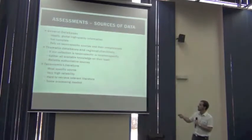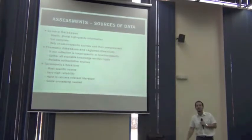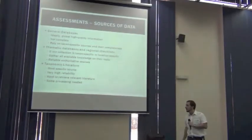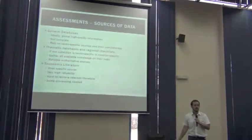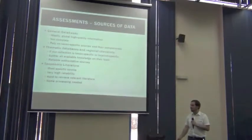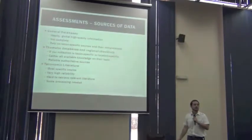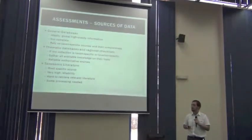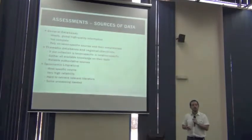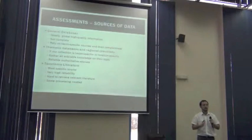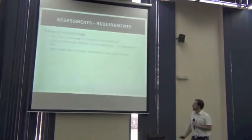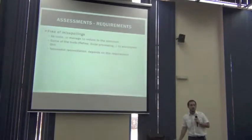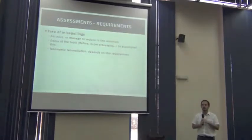which has very, very high reliability information. In fact, the rest of the sources, the general databases and the thematic databases, take their information from taxonomic literature. The problem is that it's hard to retrieve relevant literature, both in time and resources. And the information is not readily available. You have to do some processing to extract the information so that you can use it.